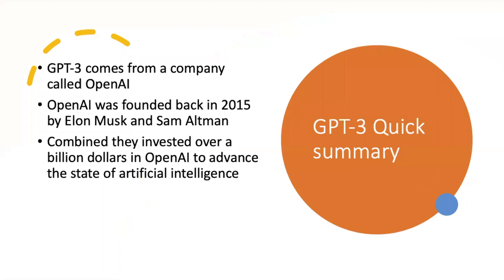First let's go over a quick summary of what GPT-3 is. GPT-3 comes from a company called OpenAI, which was founded back in 2015 by Elon Musk and Sam Altman. Combined, they invested over a billion dollars in OpenAI to advance the state of artificial intelligence.